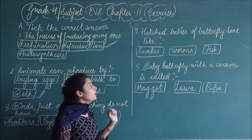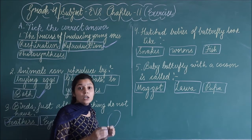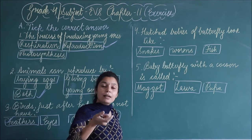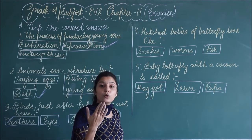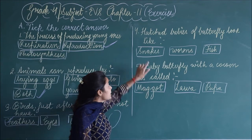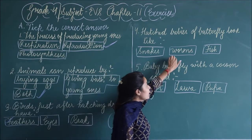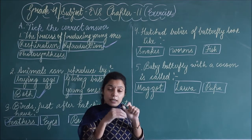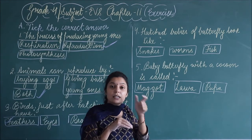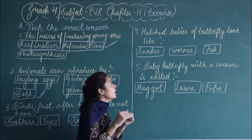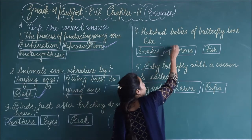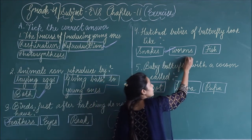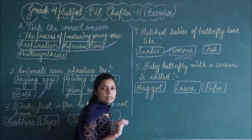Fourth question: hatch babies of butterfly look like — jho butterfly ke babies hoti hai, jab wo egg ko break karke bahar nikalti hai, toh woh kis ke jaise dikhai deti hai? Options are: snake, worms, or fish. When baby butterfly hatches out of the egg, it looks like small worms — worms ke jaise dikhai deti hai. It has a cylindrical shape, so it looks like worms.